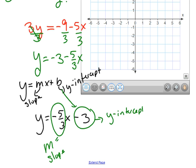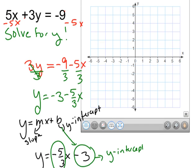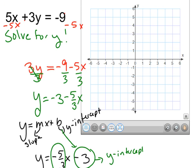When I'm graphing, I always start at the b, so I'm going to start at the negative 3, and I'm going to put a dot. And then I remember that if my slope is negative 5 over 3, I remember slope is rise over run. So, it tells me to rise negative 5 and go right 3.